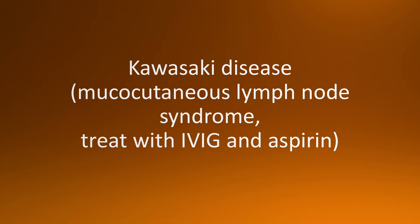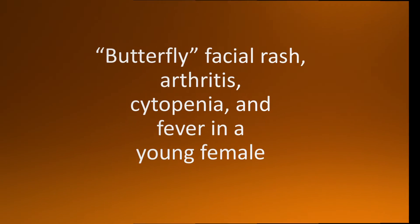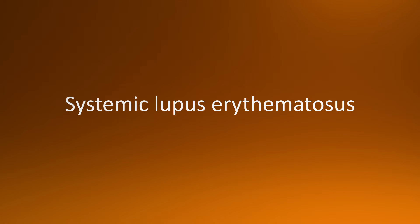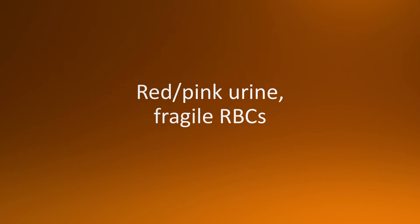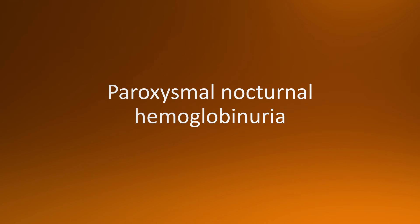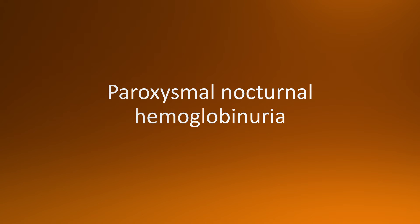Moving on to our next flashcard: butterfly facial rash, arthritis, cytopenia, and fever in a young female — the answer is systemic lupus erythematosus, or SLE. Next: red or pink urine in the morning and fragile red blood cells — the answer is paroxysmal nocturnal hemoglobinuria. Those are all the flashcards for this session.